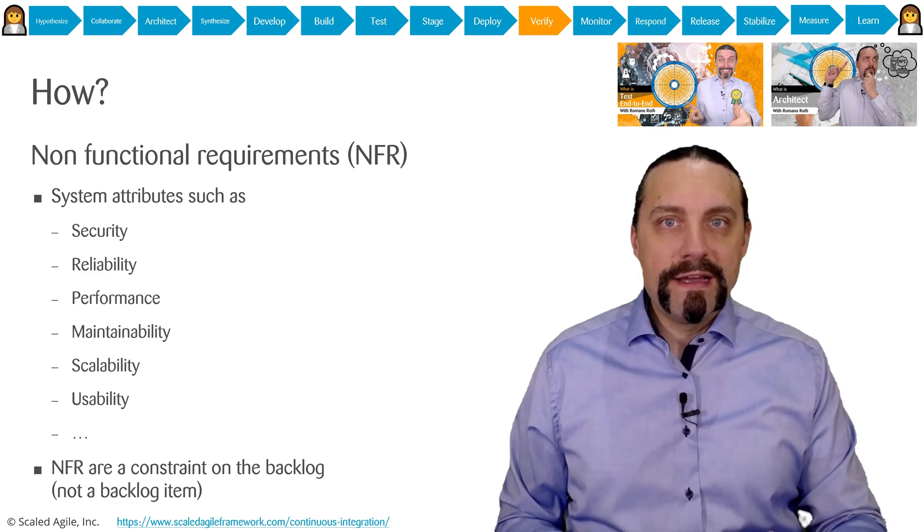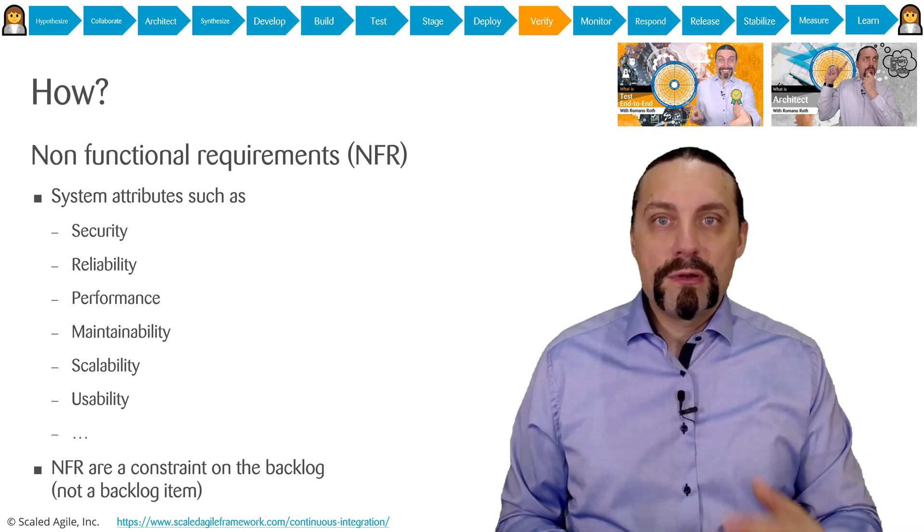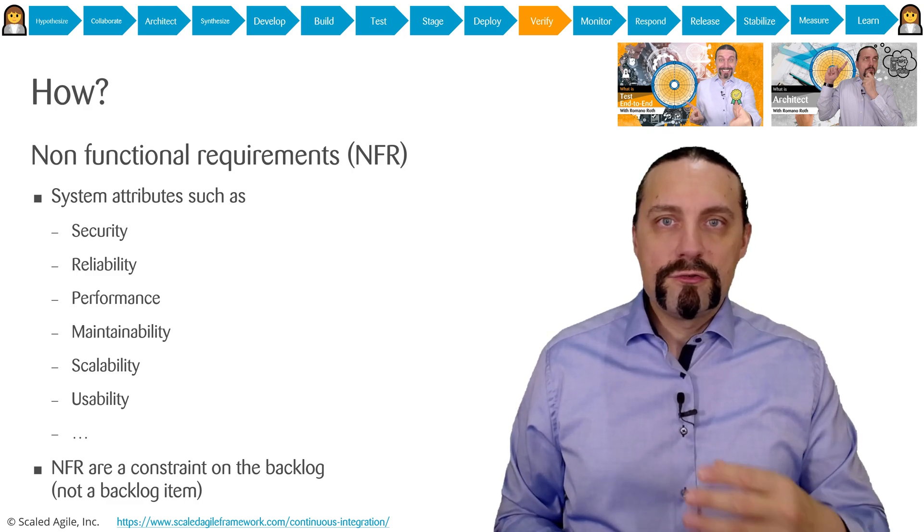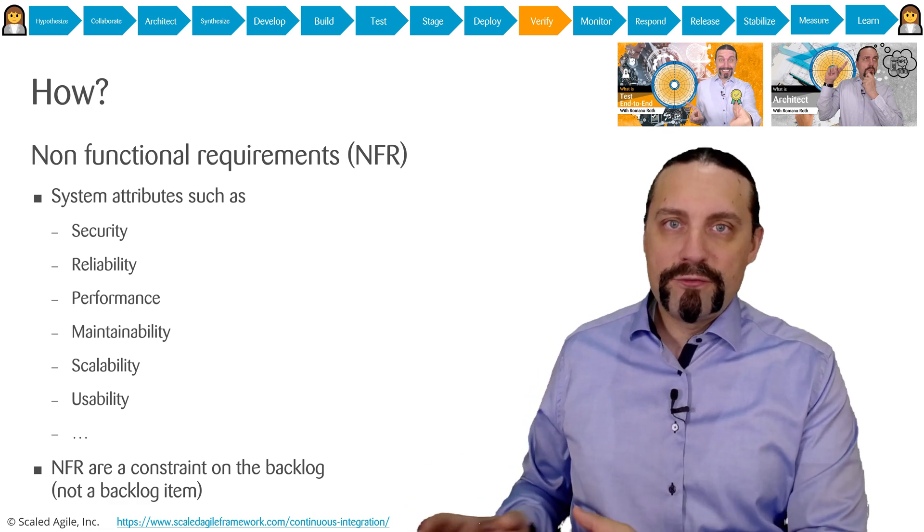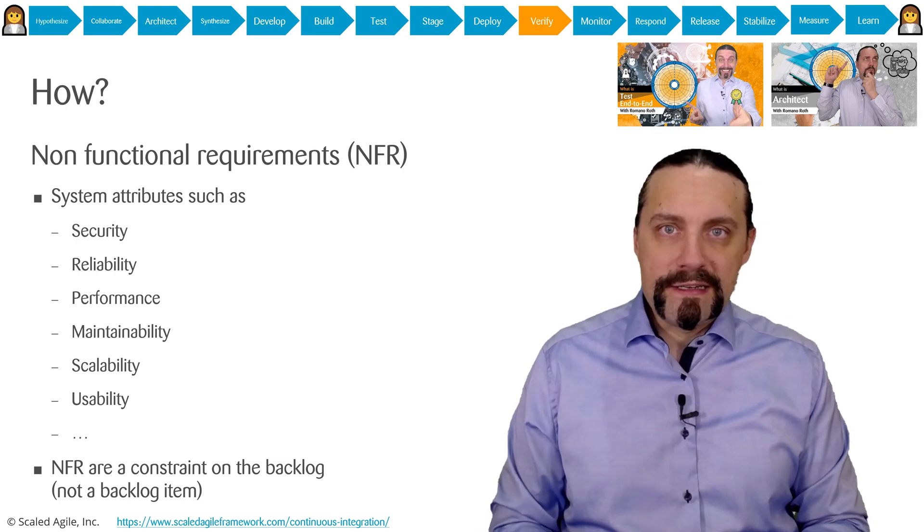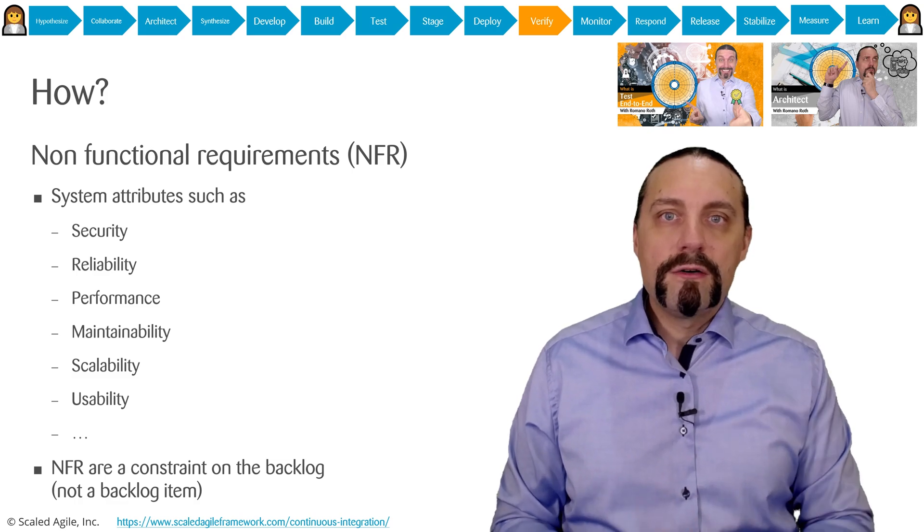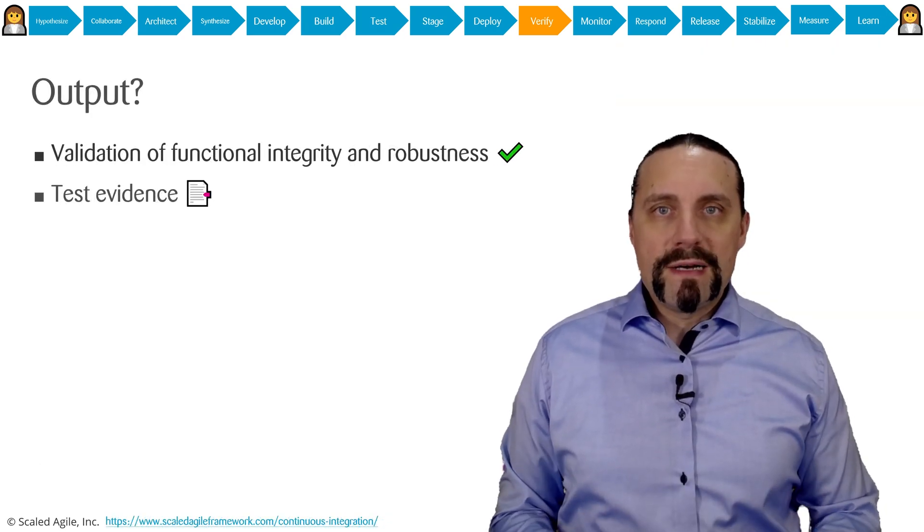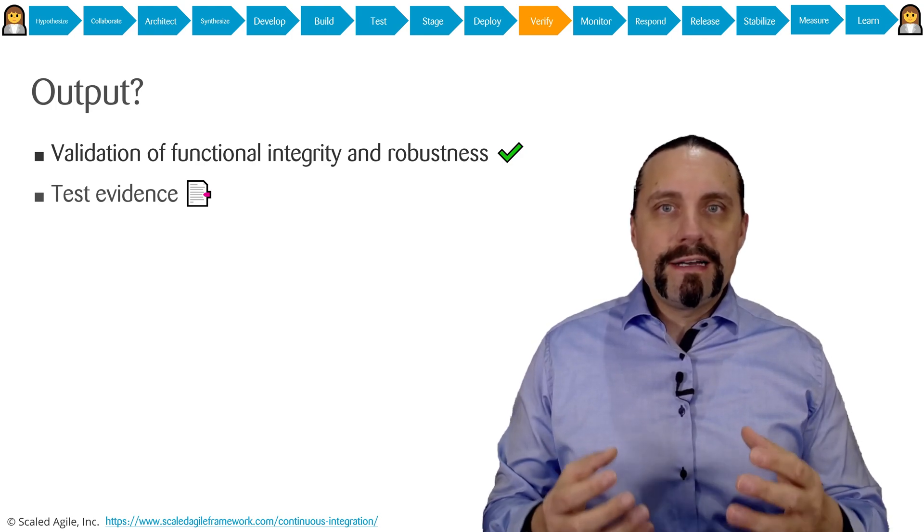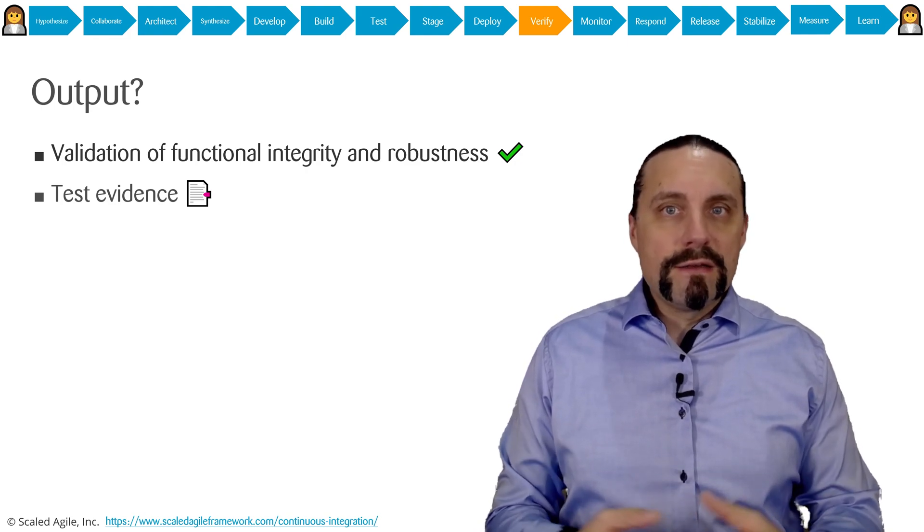Which means that with every user story, with every feature, with every epic, we need to comply with these non-functional requirements. Of course, we need to verify the non-functional requirements first in the staging environment. But of course, we definitely need to verify if we meet the non-functional requirements also in the production environment. We have talked about all of the practices which we can use to verify the deployable artifact or the deployed code in production.